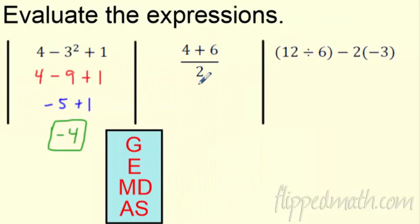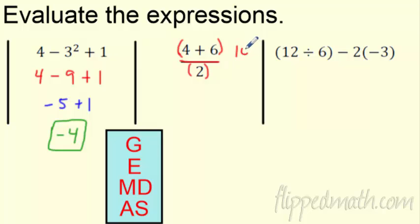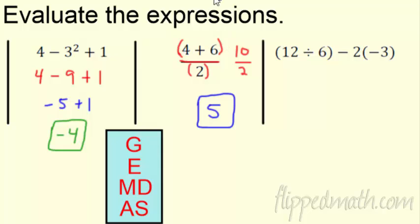This fraction bar is a grouping sign — that's our first G. Even though you don't see parentheses, the fraction bar groups the top and the bottom. The whole top is being divided by the whole bottom. So 4 plus 6 first gives us 10, and 10 divided by 2 is 5. The fraction bar as a grouping sign is going to be huge going forward.